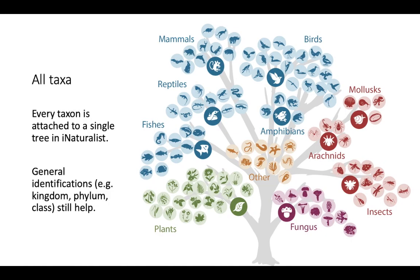One of the cool things that makes iNaturalist work is that every taxon represented on iNaturalist is attached to a single tree of life. What this means is that you can identify something at a very coarse level like kingdom, phylum, or class, and it'll still help, because then other folks can come along and may be able to add a finer identification to it. So even if you don't know what you saw — if it's some kind of plant, you can identify it as a plant. It's actually really helpful.